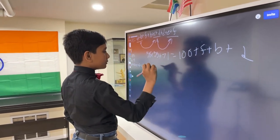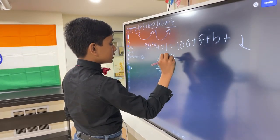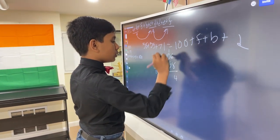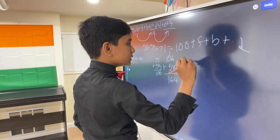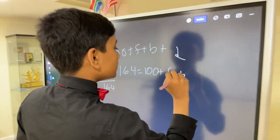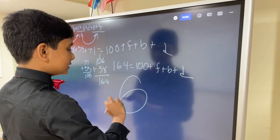58 plus 35 plus 71. 71 plus 35 is obviously 106. 106 plus 58, 4, 1, 64. 164 is 100 plus F plus B plus D. So, that means our correct answer is 164 minus 100 is 64.